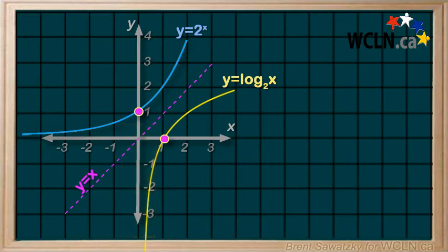And we can also see that regular reflection traits apply. That is, each point in the original exponential graph gets reflected straight across the y equals x line and ends up at the same distance but on the other side of the line. And this is our log graph.